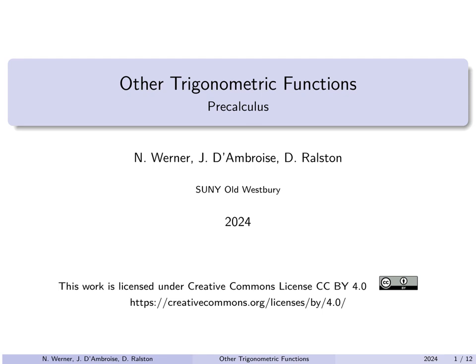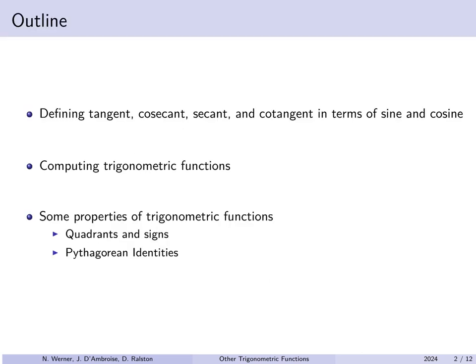Hello. In this lecture, we'll continue our study of circular trigonometry beyond sine and cosine to the other standard trigonometric functions. Specifically tangent, cosecant, secant, and cotangent will all be defined in terms of sine and cosine, but now circular trigonometry not just restricted to angles between 0 and 90 degrees.